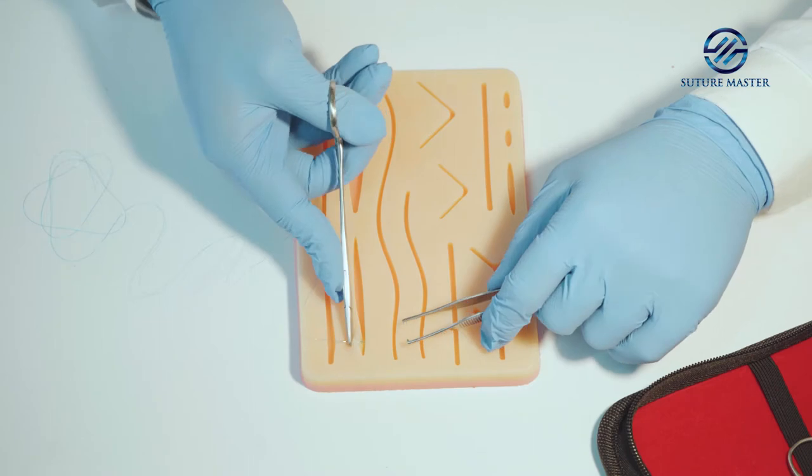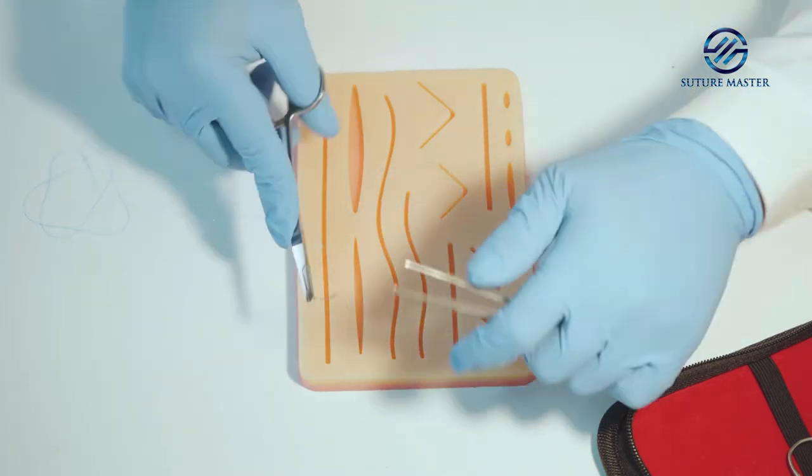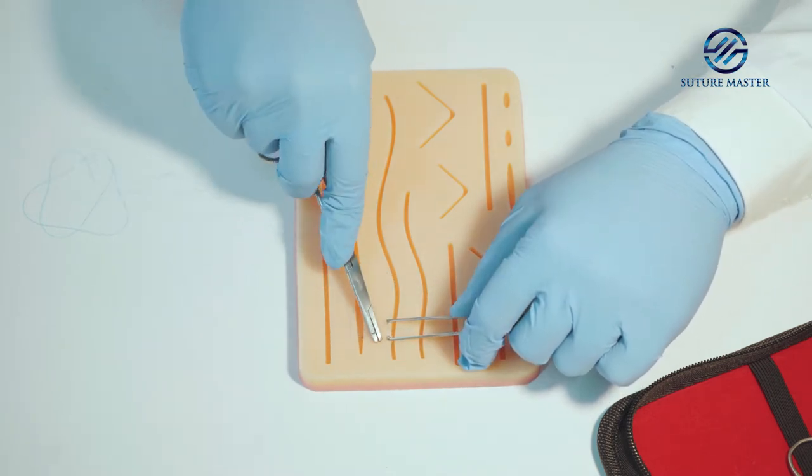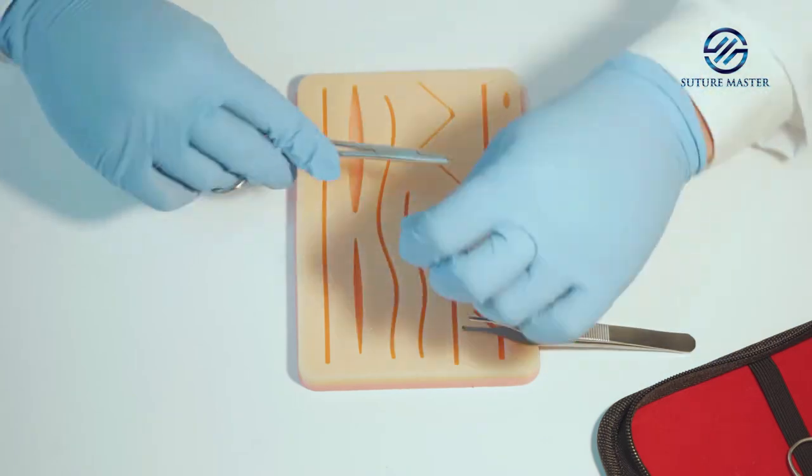Insert the needle 90 degrees to the skin. Should be around three to five millimeters away from the margin and three to five millimeters away from each other. Equal amount of tissues should be opposed on both sides.